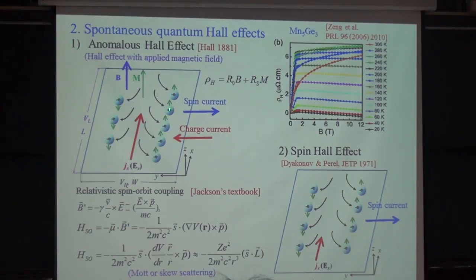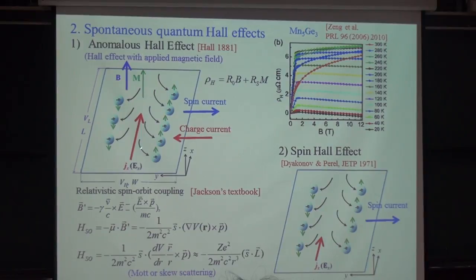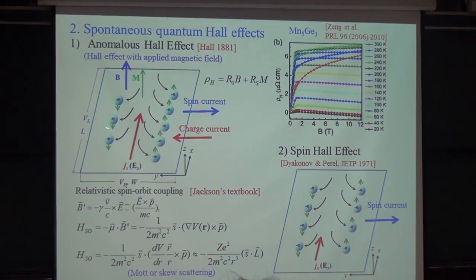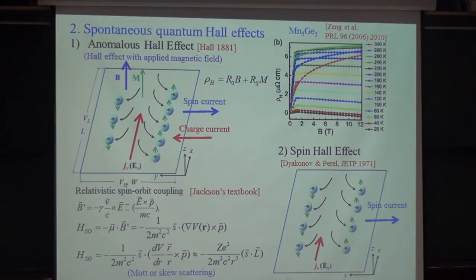For example, in a ferromagnetic material, there are more electrons with spin up than spin down. So when we apply an electric current, more spin-up electrons will accumulate on one side, and spin-down on the other. Since electrons are negatively charged, we have a Hall voltage across the sample. That's how the anomalous Hall effect appears, and this effect occurs without an applied magnetic field.